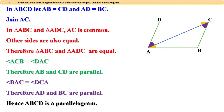We can see one more thing here. The side opposite to AC is angle D in triangle ADC and angle B in triangle ABC. Therefore angle B and angle D are equal. Looking at parallelogram ABCD, we can see that opposite angles B and D are equal. Similarly, if we join BD instead of AC, we can prove that angle A and angle C are also equal — meaning the opposite angles of a parallelogram are equal.